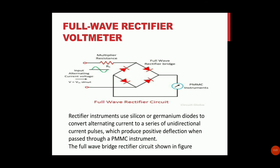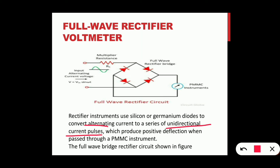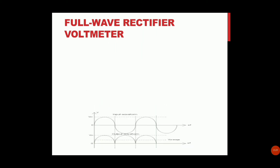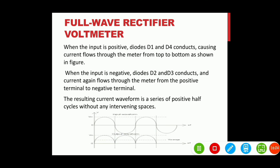Rectifier instruments use silicon or germanium diodes to convert alternating current to unidirectional current pulses. Unidirectional current is DC; alternating current converted to DC produces positive deflection in the PMMC instrument. During the positive input half-cycle, D1 and D4 conduct, causing current to flow through the meter from top to bottom. During the negative half-cycle, D2 and D3 conduct, from positive terminal to negative terminal.